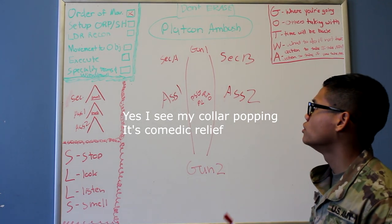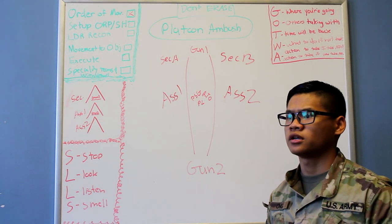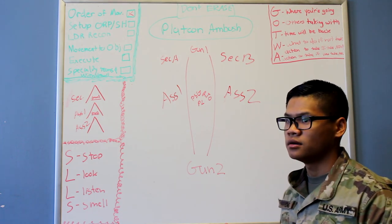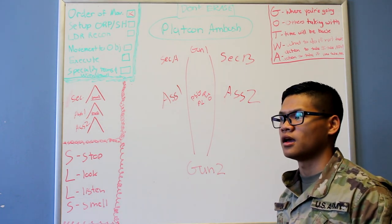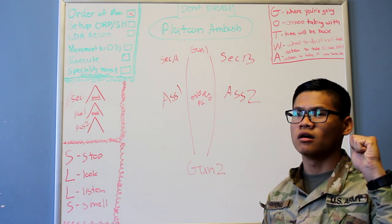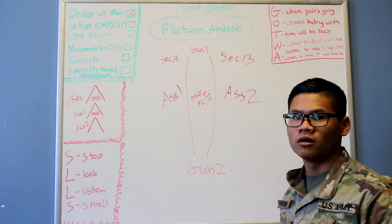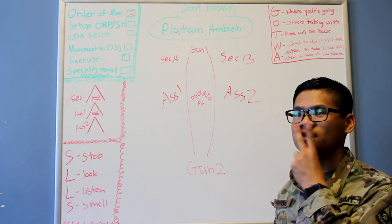Before moving to the objective, you need to set up an ORP or security halt. In order to conduct the ORP, we're going to call a hand and arm signal for halt, which is this. From there we're going to call the cigar shape ORP or security halt, which the hand and arm signal will be this.